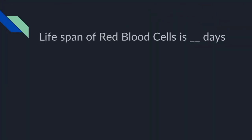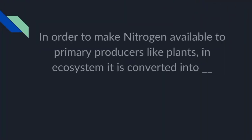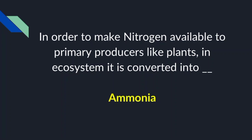The lifespan of red blood cells is 120 days. The percentage of water present in our brain is 73%. In order to make nitrogen available to primary producers like plants in an ecosystem, it is converted into ammonia.